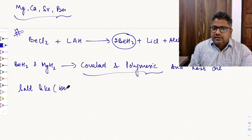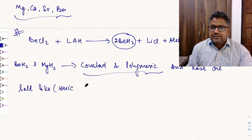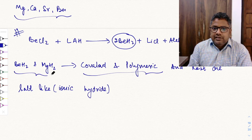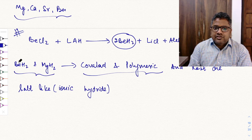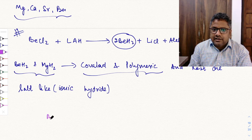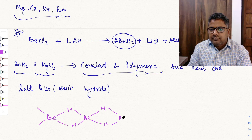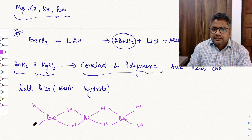The rest of the group 2 hydrides are salt-like, meaning ionic hydrides. So BeH2 and MgH2 are covalent and polymeric, while the rest (CaH2, SrH2, BaH2) are ionic (salt-like) hydrides.